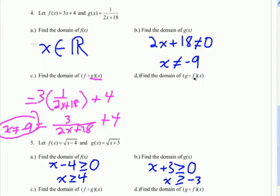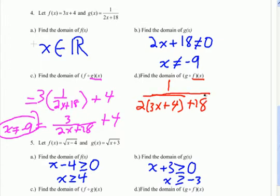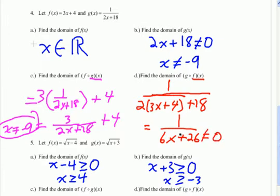On the next one, g of f of x: f of x is a linear function with no domain restriction. So let's compose: plug f of x into g of x and get 1 over 2 times (3x plus 4) plus 18. Distributing gives 6x plus 8 plus 18, which equals 6x plus 26 in the denominator. Since the denominator can't equal zero, we set it equal to zero, subtract 26, and divide by 6, getting x can't equal negative 26 over 6, which reduces to negative 13 over 3.